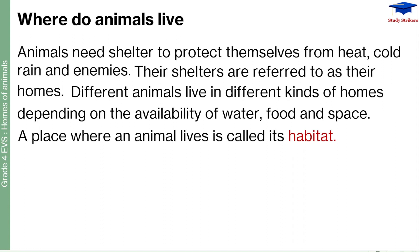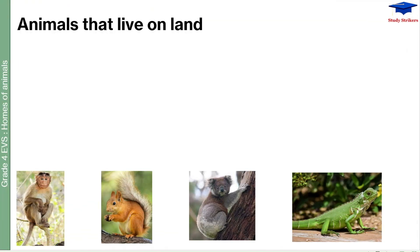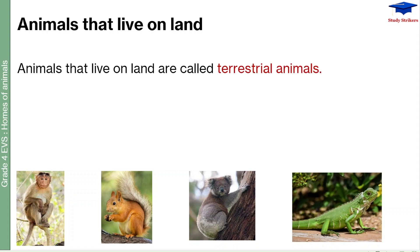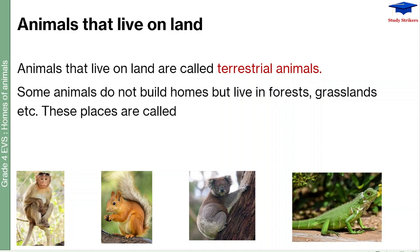Different animals are going to have different kinds of habitats. Animals can be grouped on the basis of their habitats. All of the animals we can see here live on land. Animals that live on land are called terrestrial animals. Some animals do not build homes but live in forests, grasslands, etc. These places are called natural shelters.